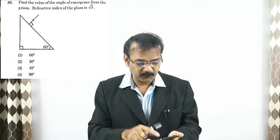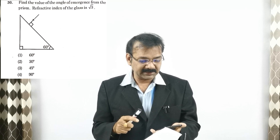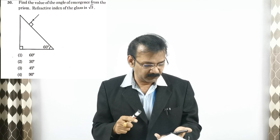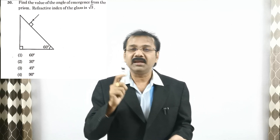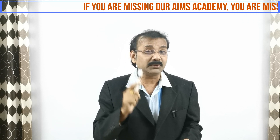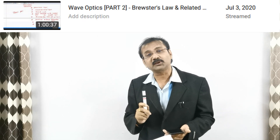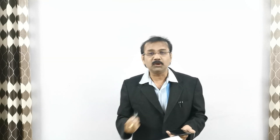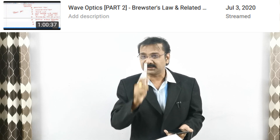Now going for question number 30 in M set 5 — find the value of angle of emergence from the prism; refractive index of the glass is √3 and a triangle has been given. Options are 60°, 30°, 45°, and 90°. I have given a clear explanation in ray optics and Brewster's law. Kindly go through the link where I have given the same type of question to find the angle of emergence.